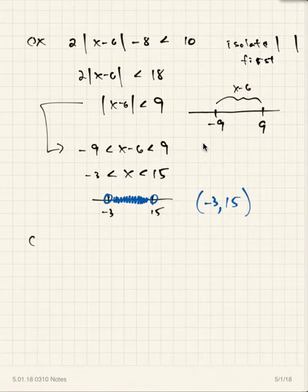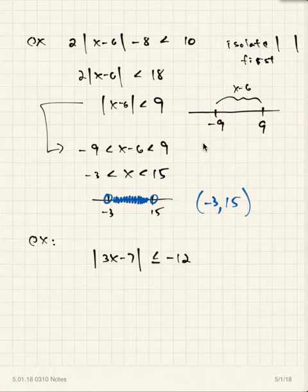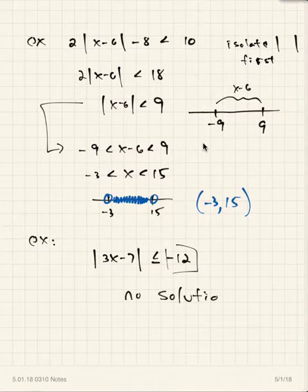If you have the absolute value of 3x minus 7 less than or equal to negative 12, there is nothing to do — absolute values cannot be less than negative numbers. Write no solution automatically.